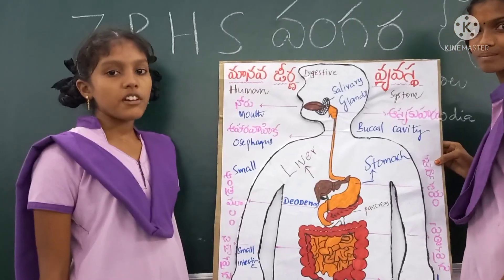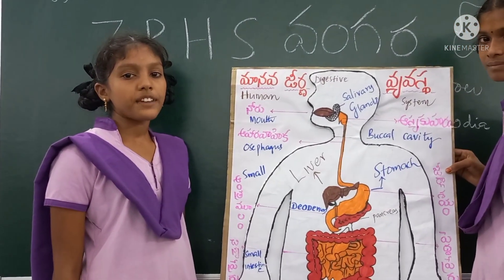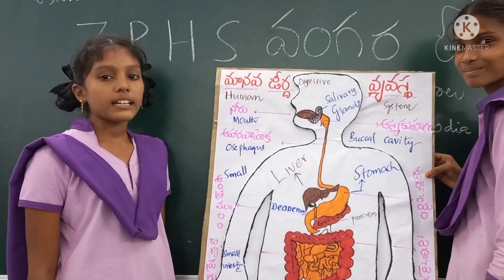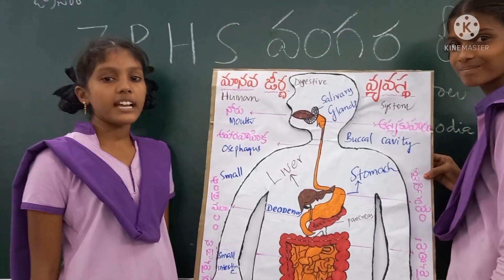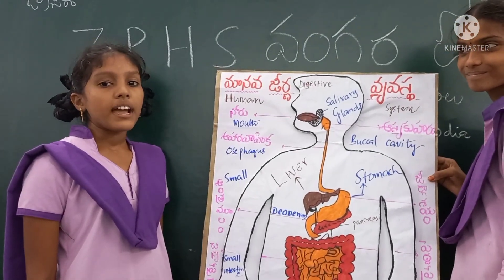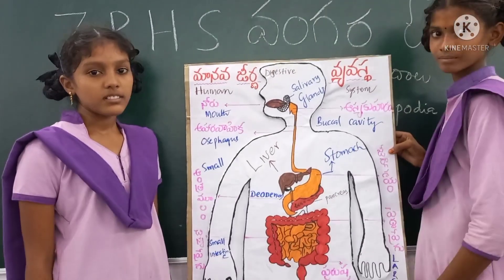Large Intestine absorbs water and minerals from undigested food. Rectum stores undigested food, and fecal matter is removed through it.